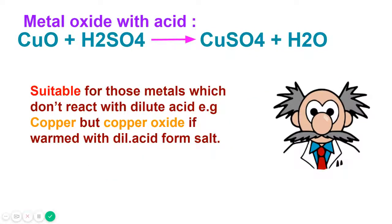Now let's see the reaction of metal oxide with acid. You can see that copper oxide is reacting with sulfuric acid and forming copper sulfate and water. Copper is displacing sulfate from the sulfuric acid and water is being formed.